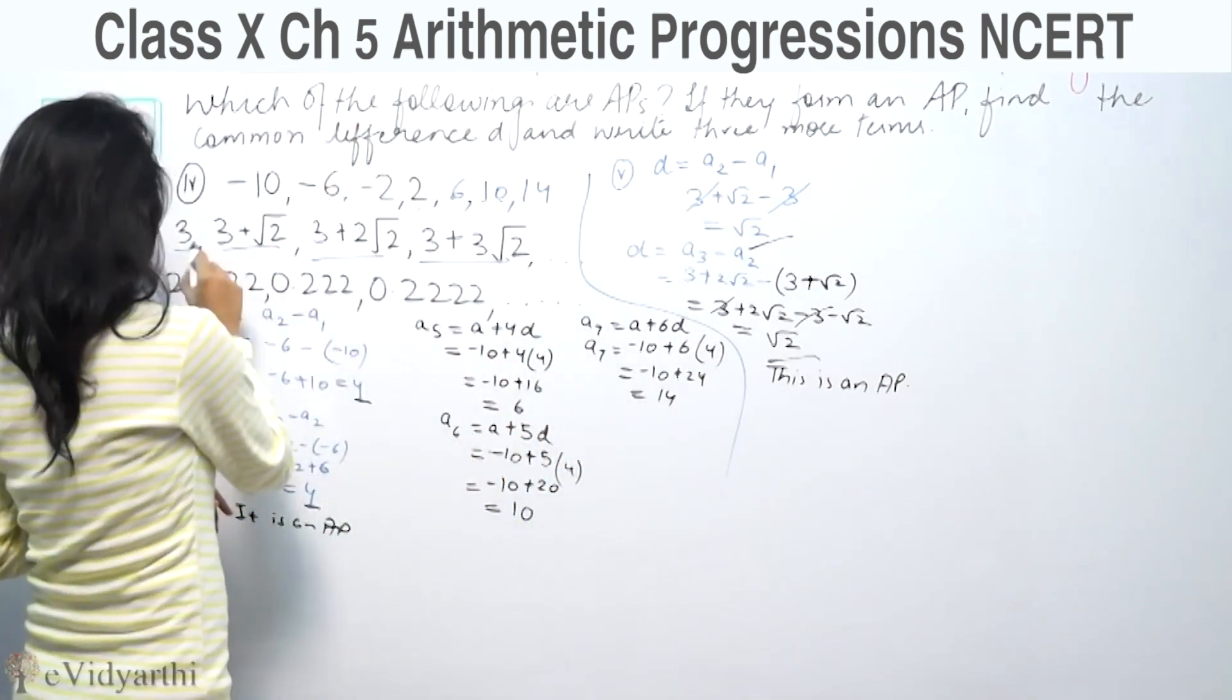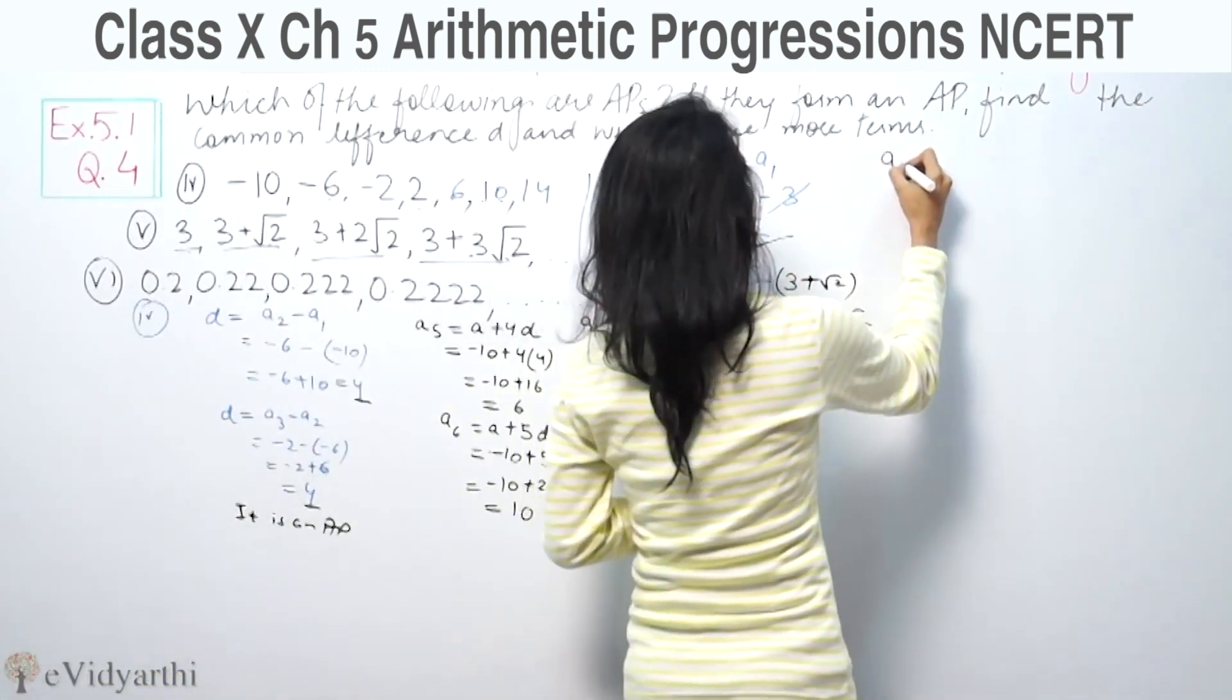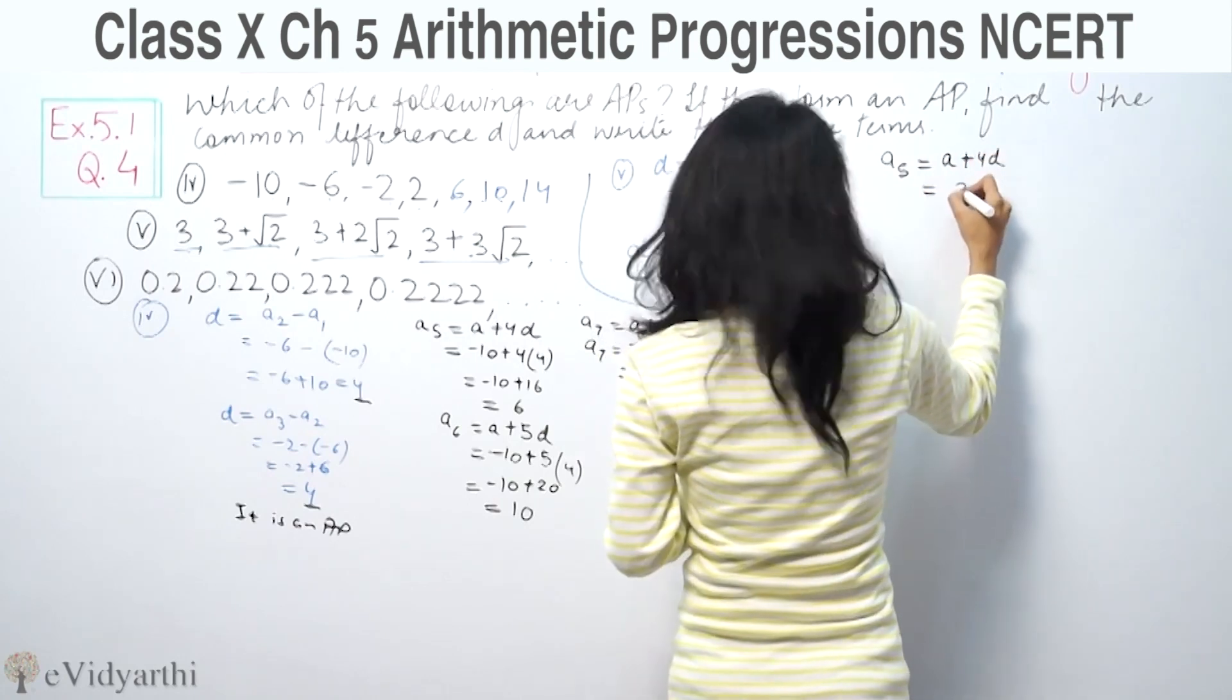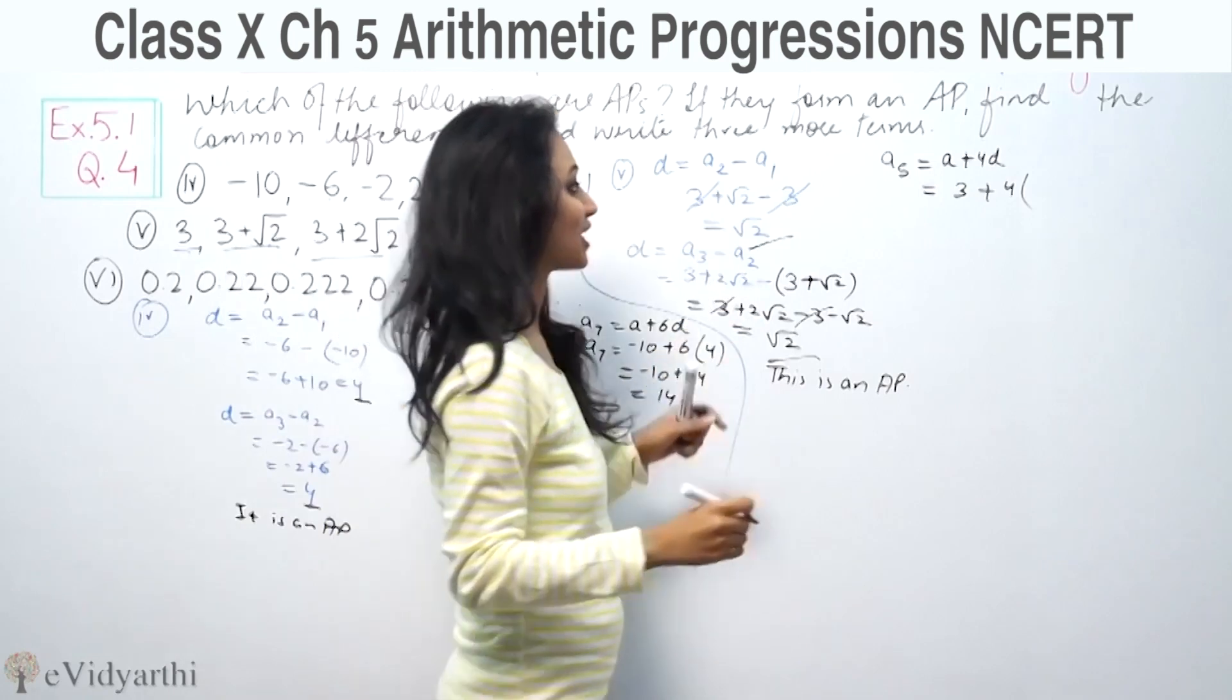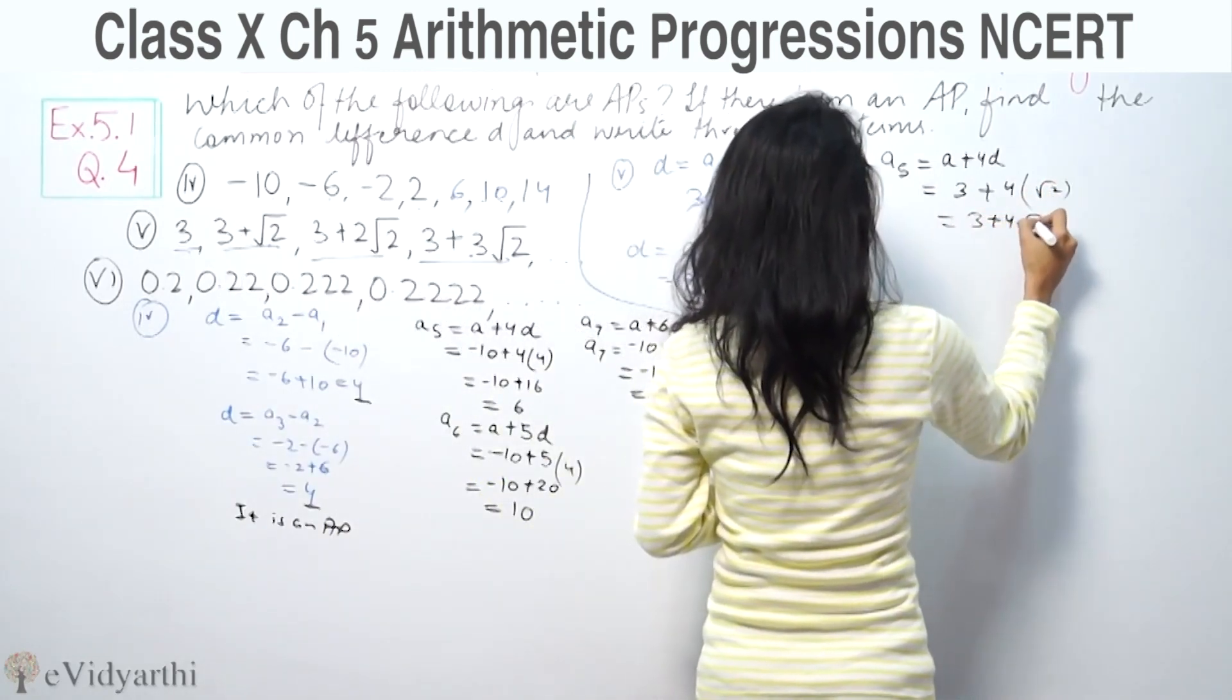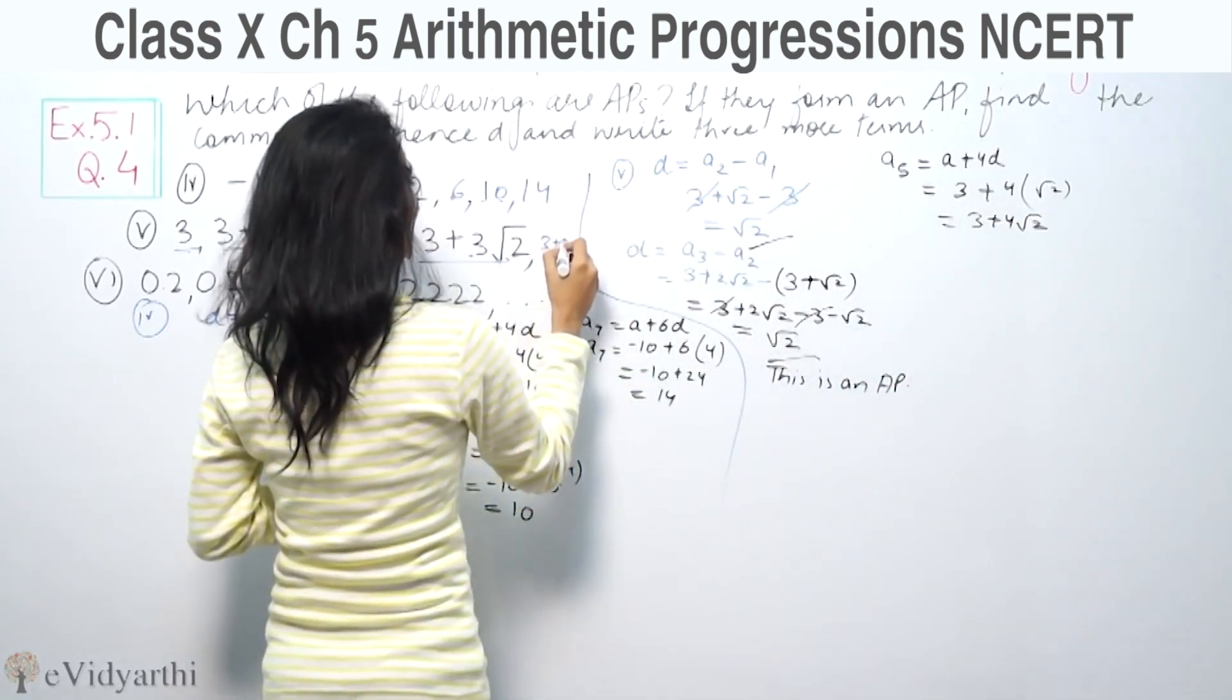So we have first term, second term, third term, fourth term. Now for A5 equals A plus 4d. The first term is 3, and the common difference is root 2, so A5 equals 3 plus 4 root 2.